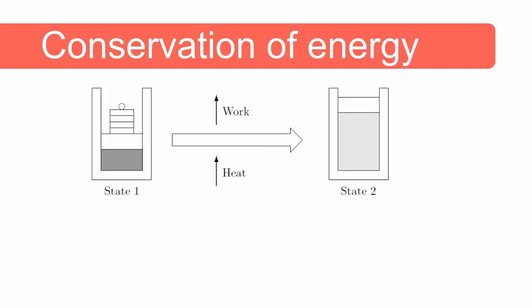Let us consider a closed system undergoing a process from state one to state two, absorbing heat and doing work. The substance inside the setup is called the control mass. Heat is added to this control mass, and as the volume of the control mass increases, work is done by the control mass on the environment.